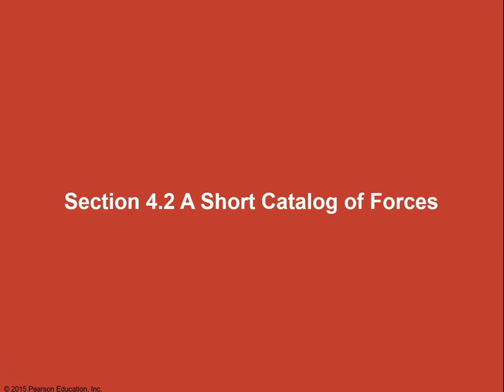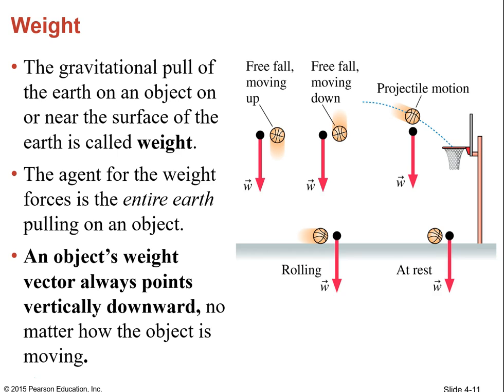Weight is a vector — the force applied by the acceleration of gravity. Weight goes toward the earth and always points straight down, vertically downward, no matter what angle anything is at. The weight vector always points down.